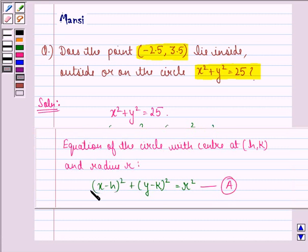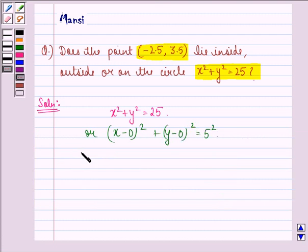Now, comparing it with the standard equation of the circle, we get (h,k) = (0,0). This is the center and r = 5 is the radius of the given circle.